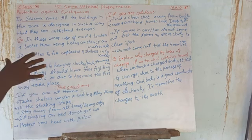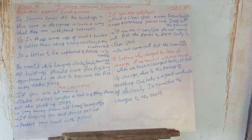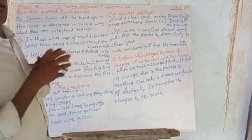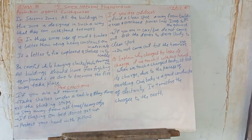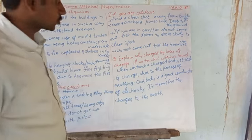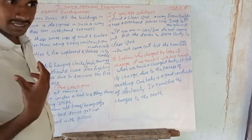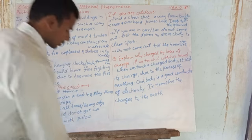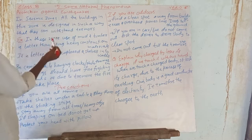Here we look at natural phenomena — protection against earthquakes. There are two types of zones: a weak zone and a strong zone. Based on these zones, we consider how to construct our houses and buildings, and what conditions apply for protection from earthquakes.